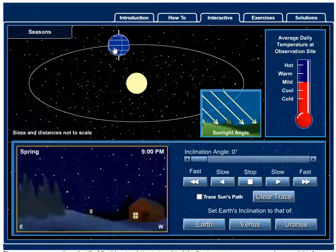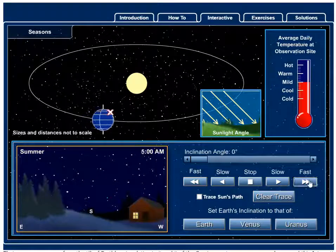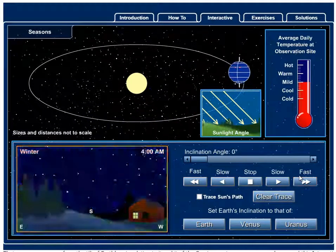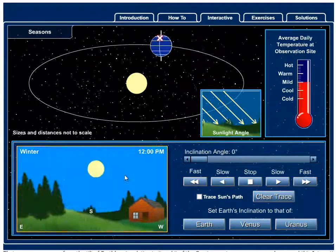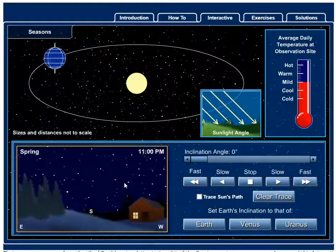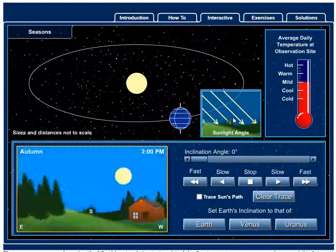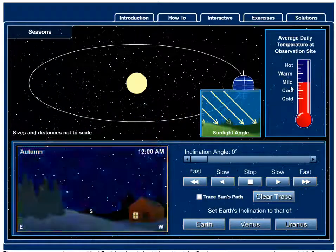So I can drag this planet around and we could look at specific times or I can run it really fast. Notice that when this planet is straight up and down we have no change in height in the Sun's position throughout the seasons. The sunlight angle is always the same striking the surface at a 45 degree angle and the temperature is always mild.